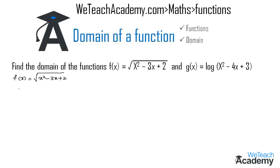This is in the form of √f(x), and it is defined only when f(x) is greater than or equal to 0. So let us consider x² - 3x + 2 ≥ 0, and now let us find the factors of this expression by the factorization method.